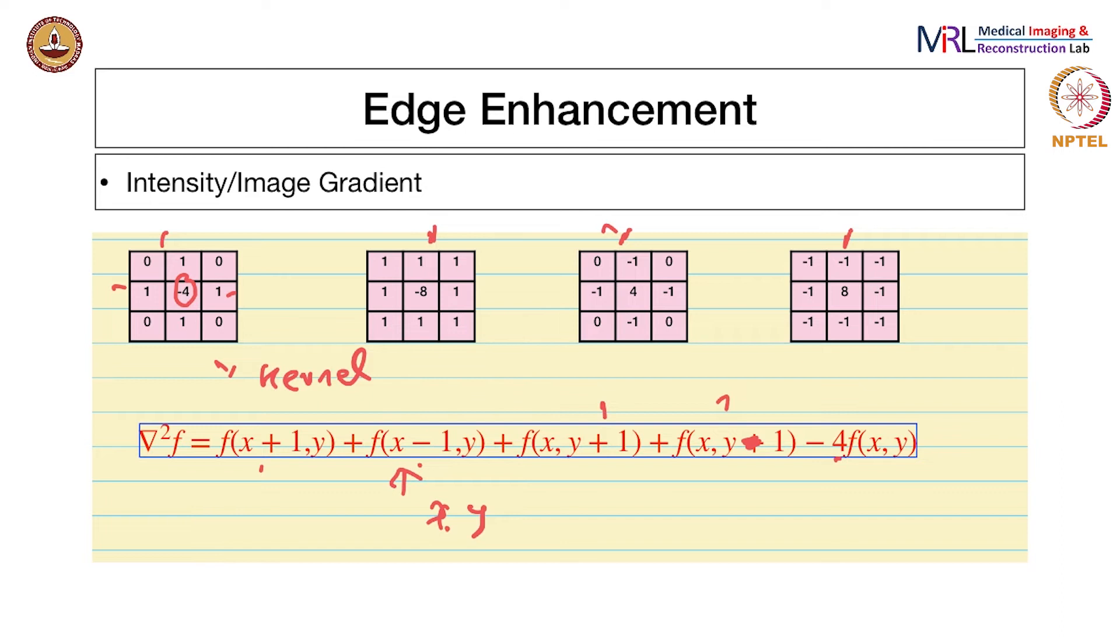This is the Laplacian kernel usually convolved with the image to get the output. What is it used for? The Laplacian detects what are called zero crossings, which are used to detect edges. Whenever there's an abrupt change in intensity in an image, which happens at the edges of structures, the center of that transition region can be detected using the Laplacian. It's basically an edge detector. It's also sometimes used for enhancing edges by calculating the Laplacian, multiplying by a constant, and adding it back to the original image.